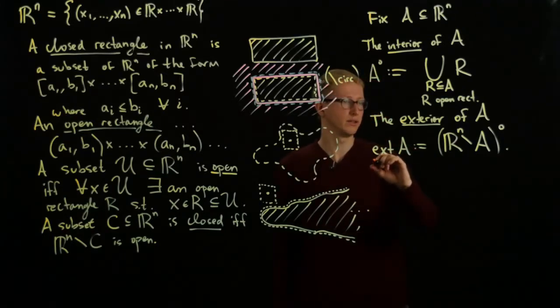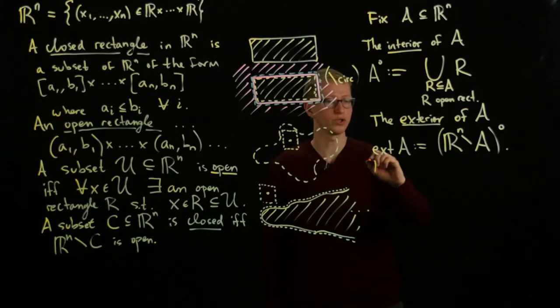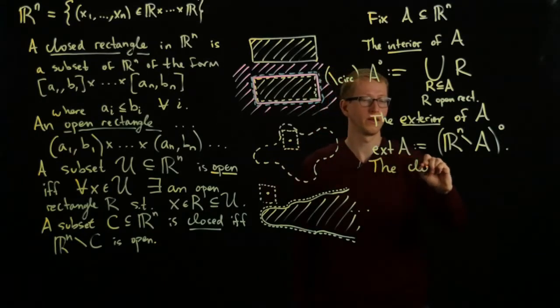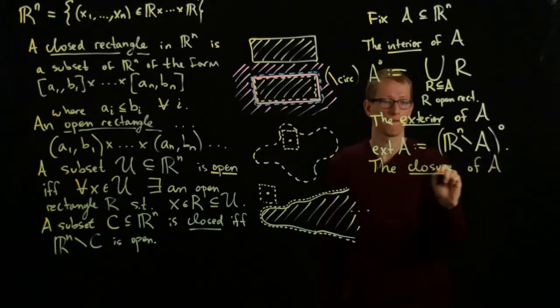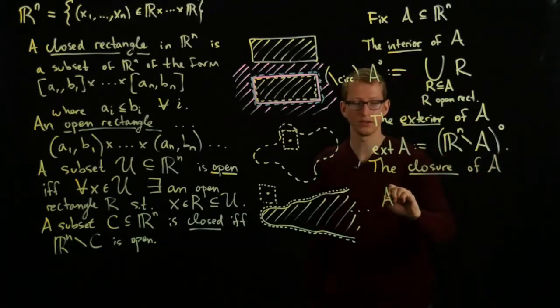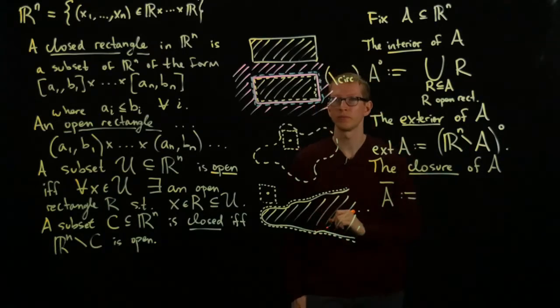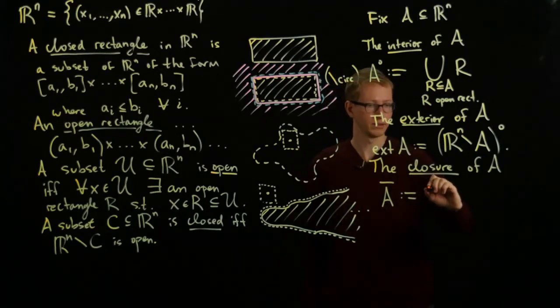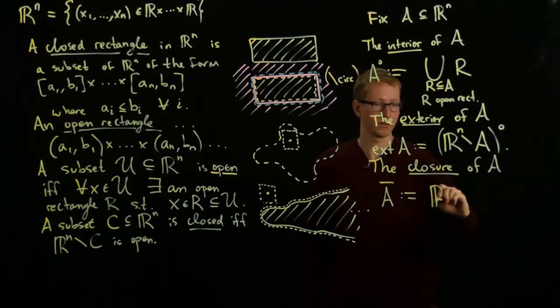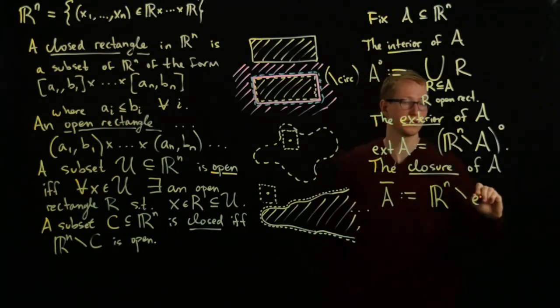Another concept that we need is the closure of A. And the closure of A is denoted with an overline. And the closure of A is the complement of the exterior of A.